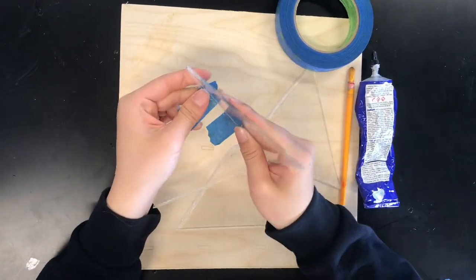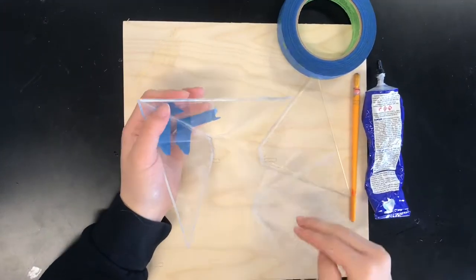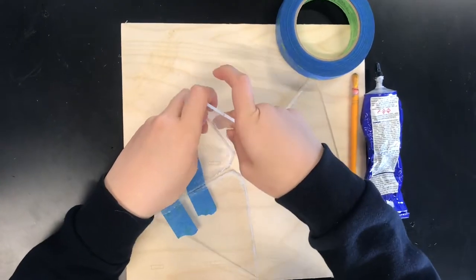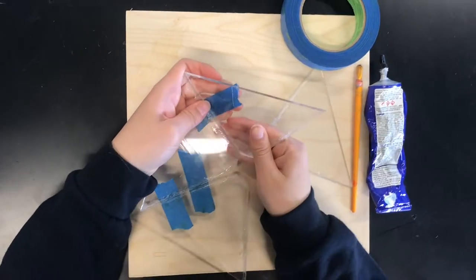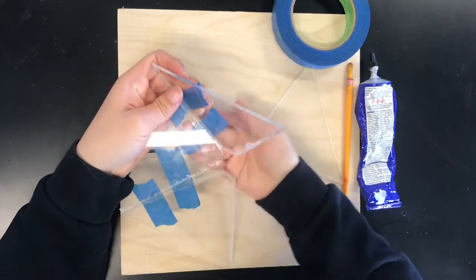Before we apply the glue onto the acrylic, you will need a roll of tape, a piece of wood, a brush, and the acrylic glue.